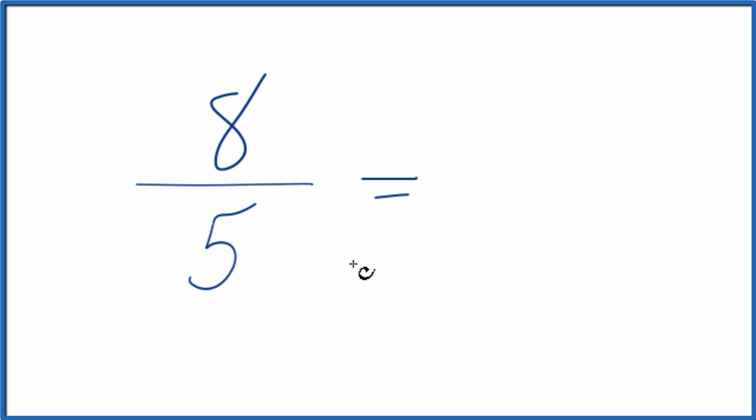We need to find a common factor, something that goes into eight and five evenly. And the only factor, the only common factor is one. So we divide eight by one, we get eight. Divide five by one, we get five.